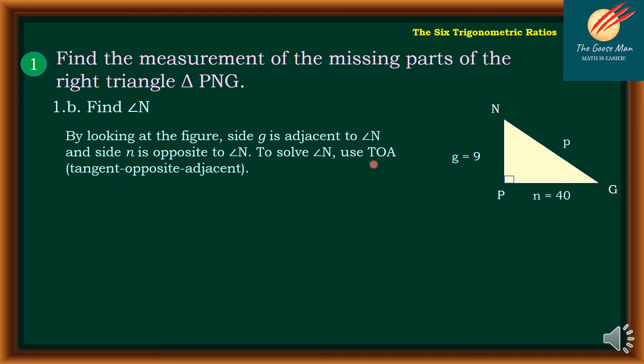So to solve for angle N, it means tangent opposite-adjacent. So recall that tan N = opposite/adjacent, such that the opposite is equal to 40 over 9. So tan N = 40/9.